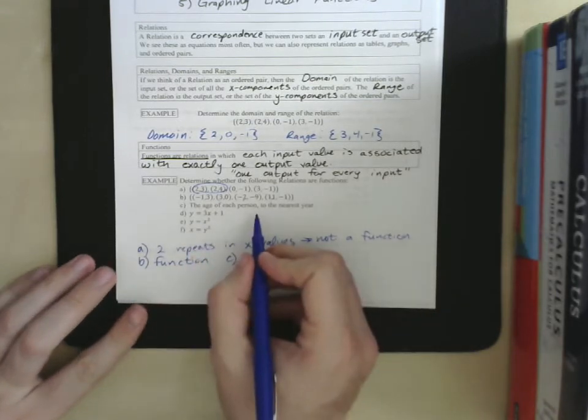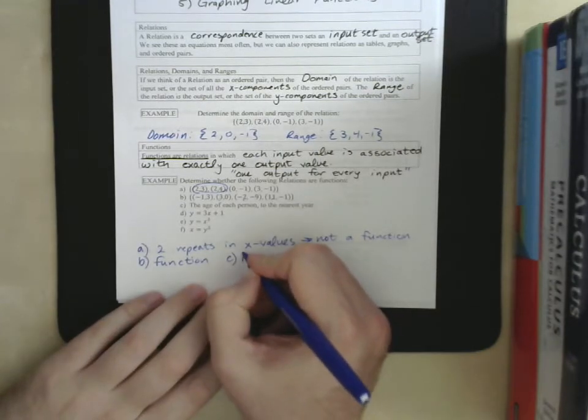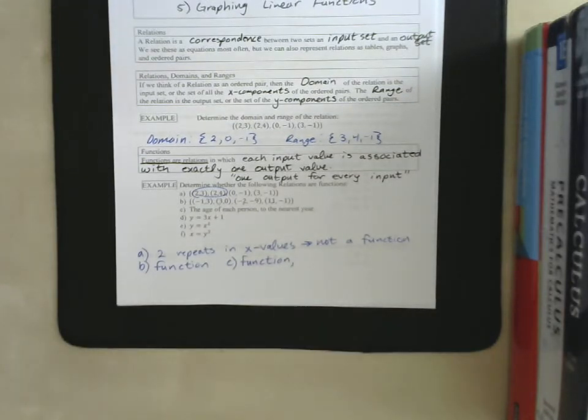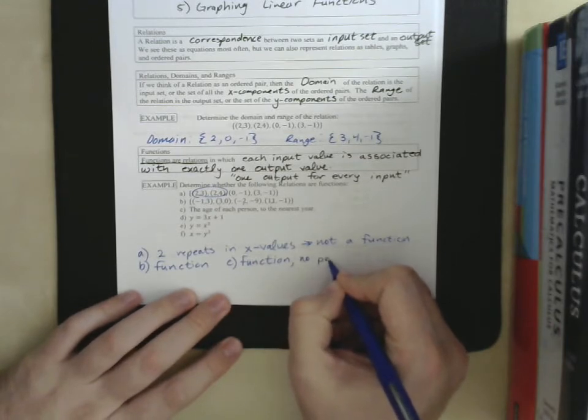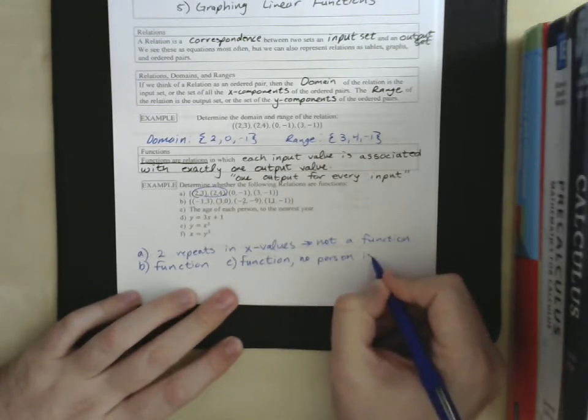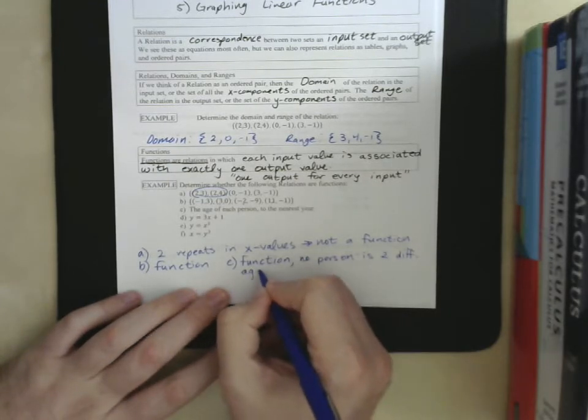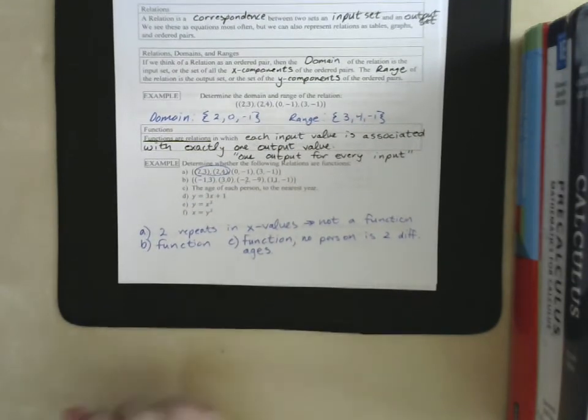We look at C, the age of each person to the nearest year. So, this is a function. And if we want to think about why, the input is the person because the number is just a number. But when you assign it to a person by the relationship of their age, it becomes a function because no person is two different ages. So, there's not going to be a single input, there's not going to be a single person that has two different outputs, ages.